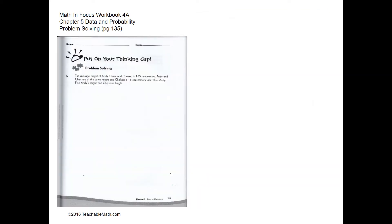Problem solving question one: the average height of Andy, Chen, and Chelsea is 145 centimeters. Andy and Chen are the same height, and Chelsea is 15 centimeters taller than Andy. First, let's find the total height of the three: 145 times 3 equals 435 centimeters.